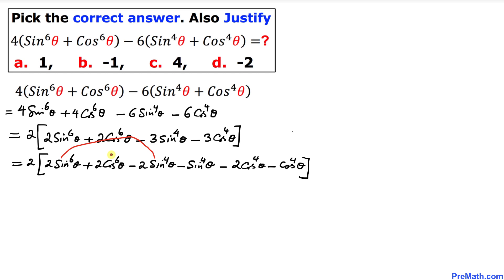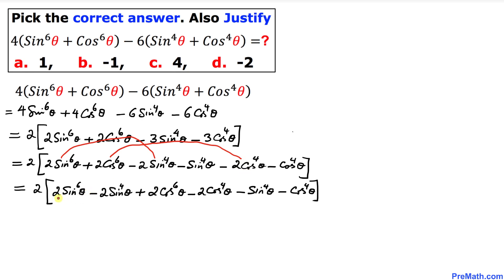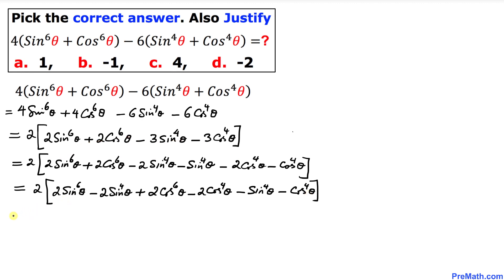Now I am going to rearrange these terms. I'll combine 2 sine to the power 6 theta with negative 2 sine to the power 4 theta, and likewise 2 cosine to the power 6 theta with negative 2 cosine to the power 4 theta, and then place the remaining two terms at the very end, all inside the bracket multiplied by 2.